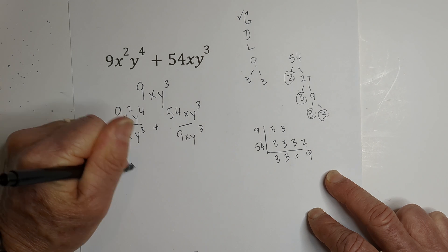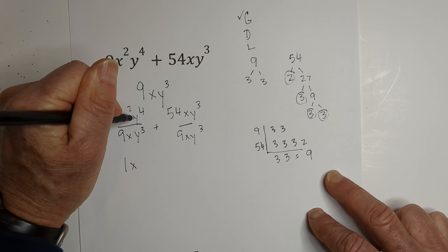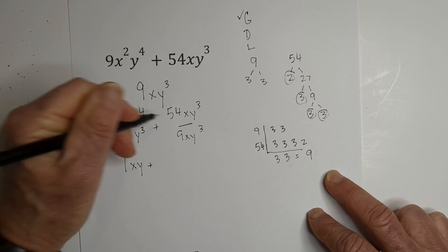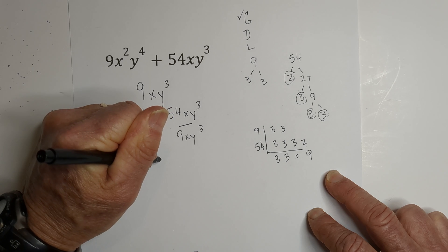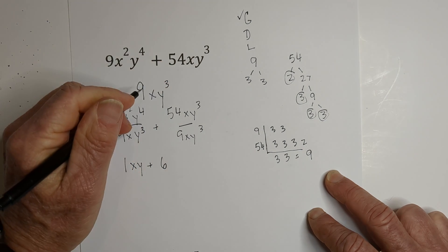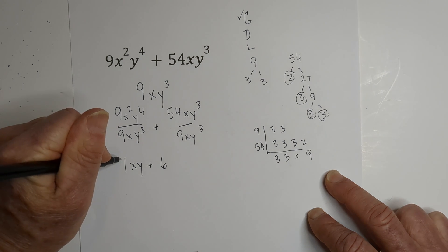Bring down the x: two minus one is one. With the y, four minus three is one. Then nine goes into 54 six times. The x's cancel, the y's cancel. So we put this in parentheses: xy + 6.